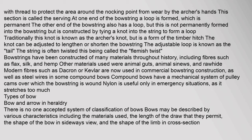Bowstrings have been constructed of many materials throughout history, including fibers such as flax, silk, and hemp. Other materials used were animal guts, animal sinews, and rawhide. Modern fibers such as Dacron or Kevlar are now used in commercial bowstring construction, as well as steel wires in some compound bows. Compound bows have a mechanical system of pulley cams over which the bowstring is wound. Nylon is useful only in emergency situations, as it stretches too much.